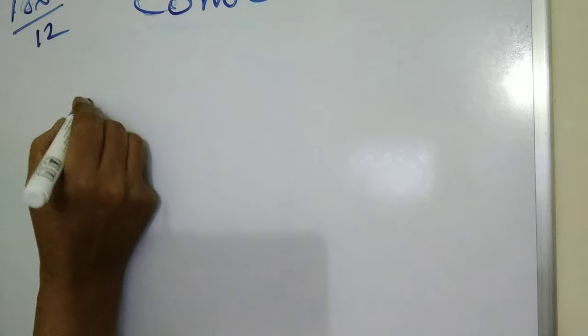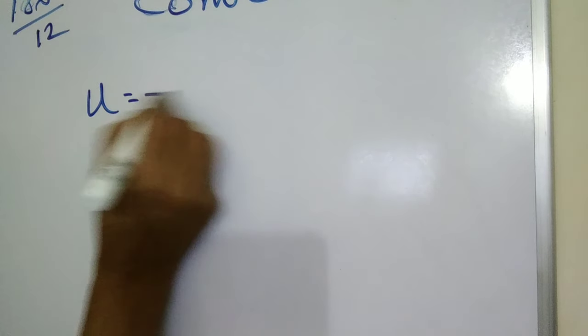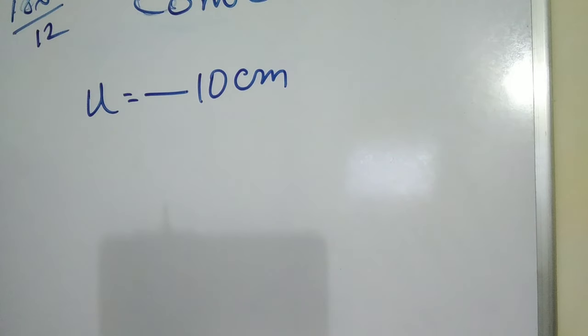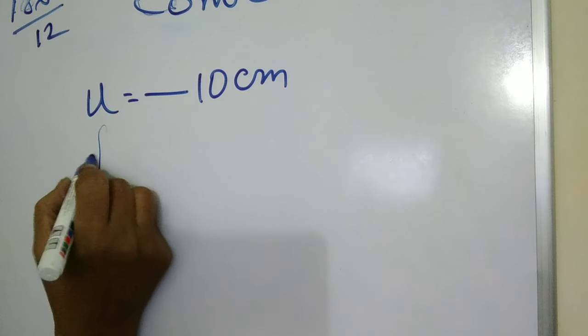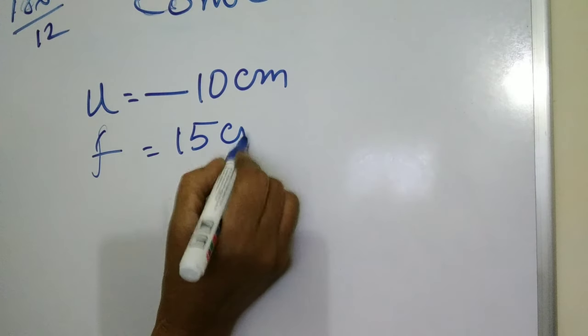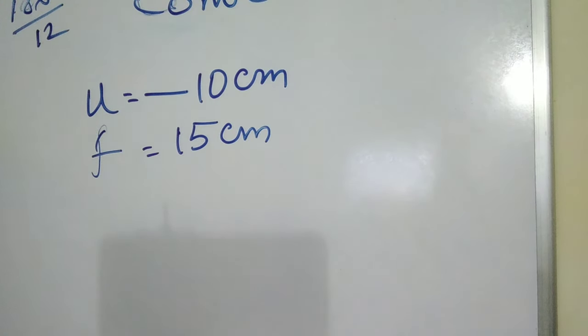Object distance is 10 cm. That is u equals 10 cm. Always u is negative, so we take u as minus 10 cm. Focal length is also given, 15 cm. F equals 15 cm. The question is find out the position and nature of the image.